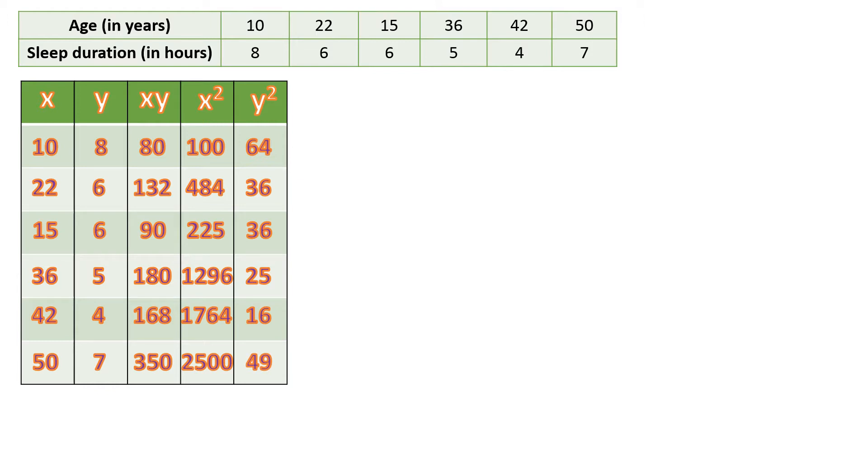As you can see, the numbers in X and Y are not arranged in order. You should not change them in order. The 10 must be paired with 8 because that is one person. Each row is a different person. This person with age 10 years old is having a sleep duration of 8 hours. If you're going to interchange it with the others, then the data will be affected. So do not rearrange them. Just put them according to how they are arranged in the given.